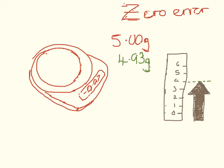You can have a zero error on a set of scales, or it can occur on a ruler which doesn't start at zero but when you're measuring things you treat it as if it does. For example, this ruler should be measuring from here up to here.